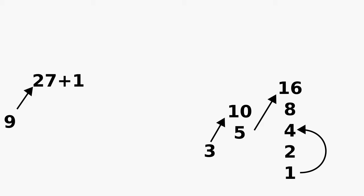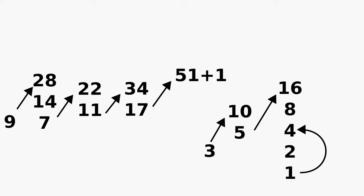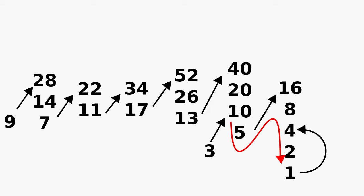What about 9? 27 plus 1 is 28. 14. 7. 21 plus 1 is 22. 11. 33 plus 1 is 34. 17. 51 plus 1 is 52. 26. 13. 39 plus 1 is 40. 20. 10. We already reached 10 with the other one, so we know how the rest play out.